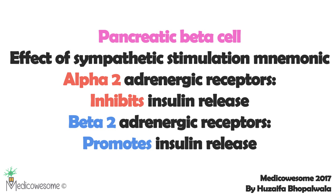Now, if you block alpha-2 and then give epinephrine, it will act only on beta-2, because you've already blocked alpha-2 on the beta cells. So the only receptor remaining on the pancreatic beta cells is beta-2 — the good boy — which becomes dominant and increases insulin secretion.